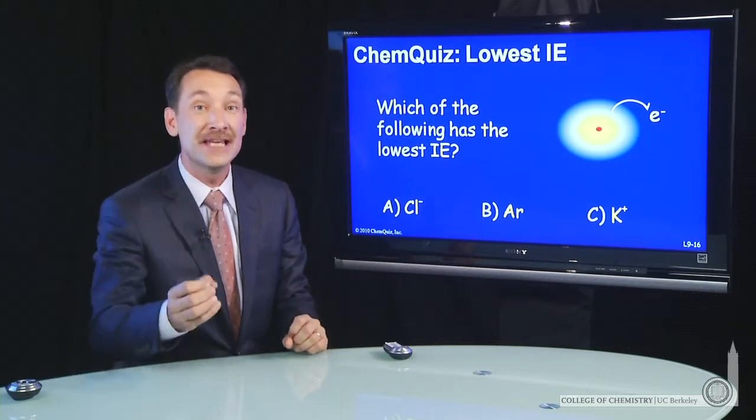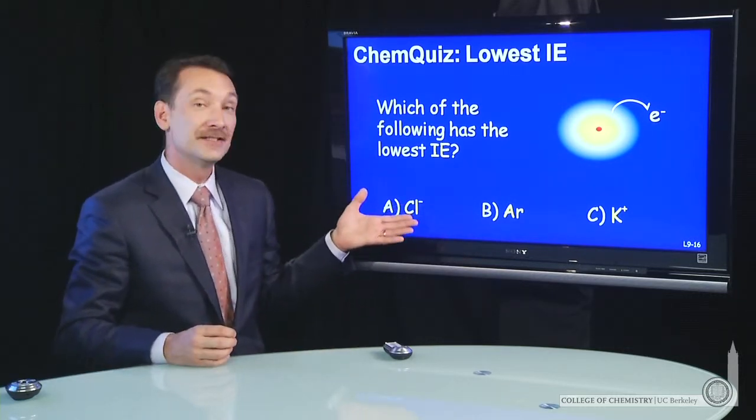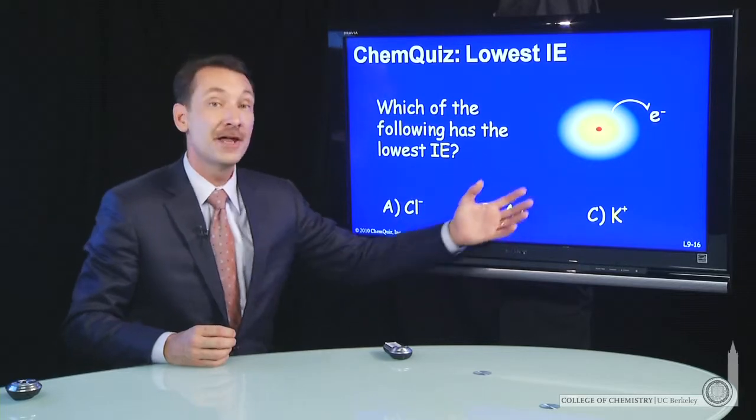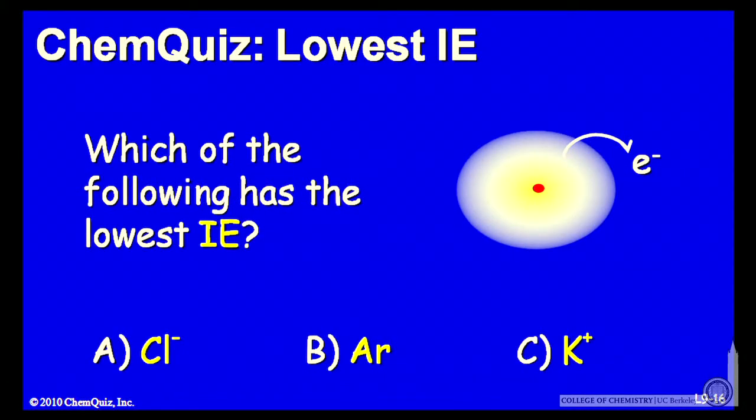Can we deduce which of these will have the lowest ionization energy? Cl minus, argon, potassium. Think about that for a minute and make a selection.